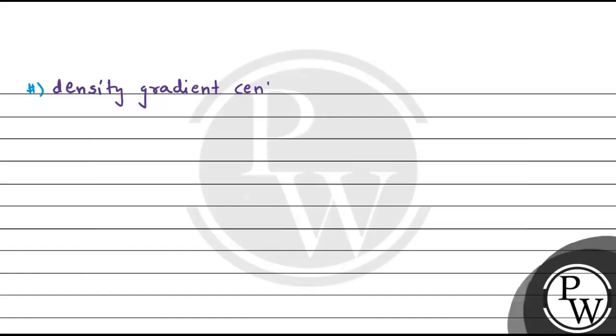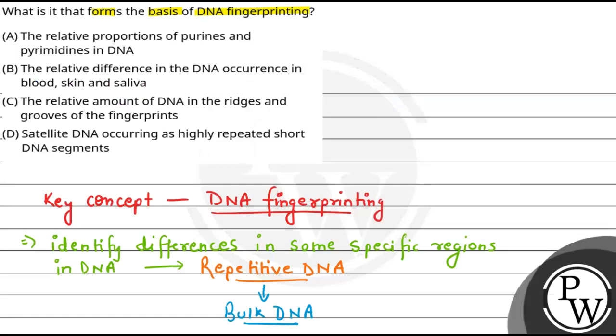In this process, we separate the bulk genomic DNA according to the density. The bulk DNA forms the major peak.